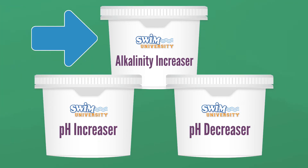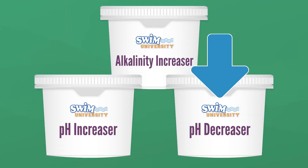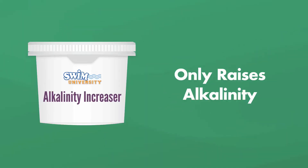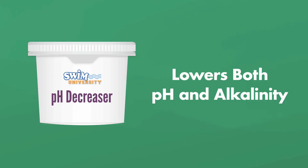But once you understand how the chemicals work, it becomes much simpler. There are three chemicals that matter in this process: alkalinity increaser, pH increaser, and pH decreaser. Alkalinity increaser only raises your alkalinity. pH increaser only raises your pH. pH decreaser actually lowers both. And there's no such chemical as alkalinity decreaser.